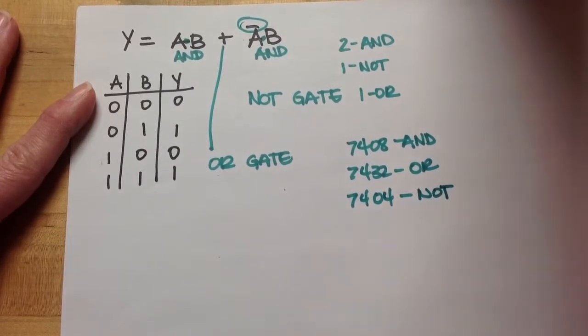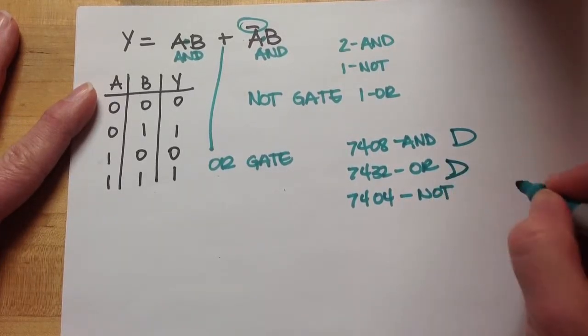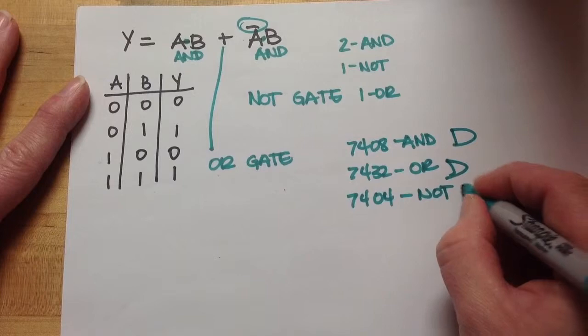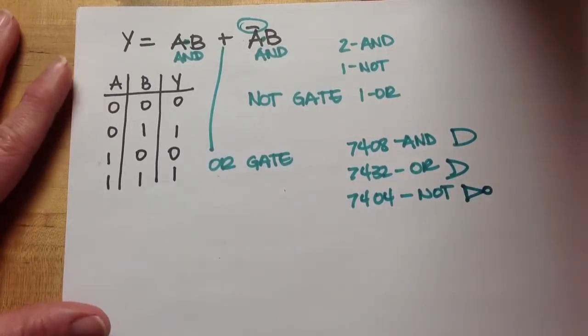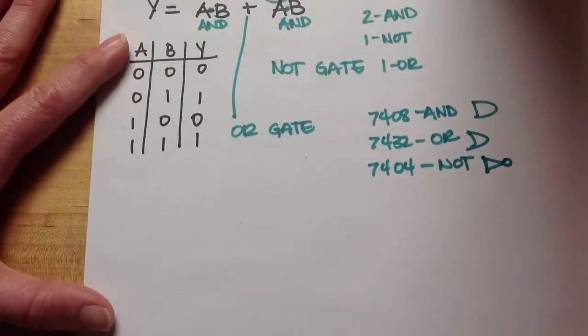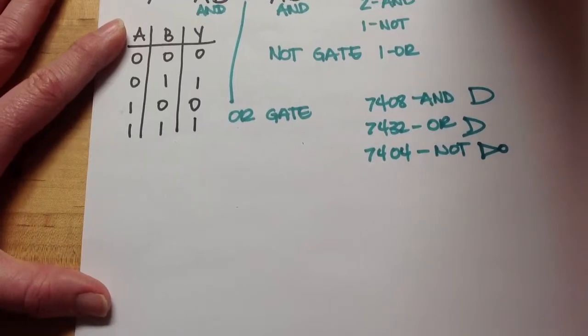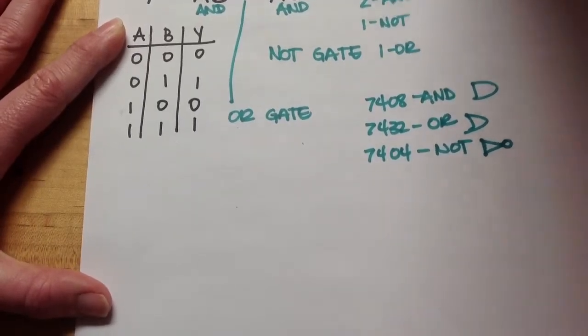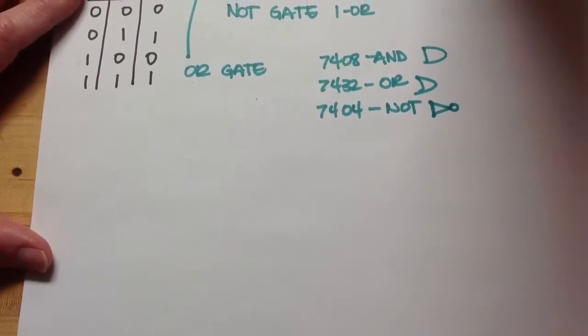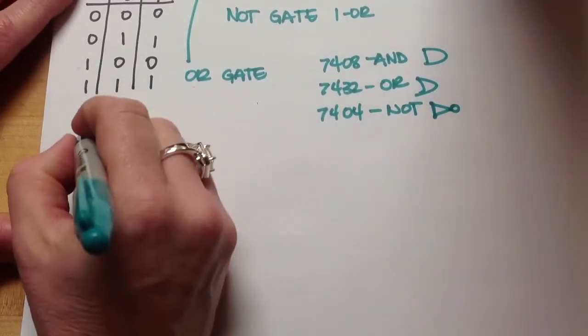And each one has a graphical representation, that would be an AND, this would be an OR, and this would be a NOT. So, let me go now and draw that circuit. I'm just going to rewrite it so you can see it.